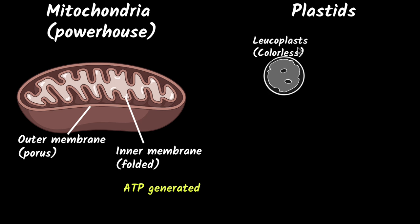Plastids come in, usually you can differentiate into two kinds. You have something called leukoplasts, these are colorless. And you have something called chromoplasts, which have colors. You can see chromo stands for colors.